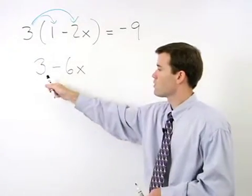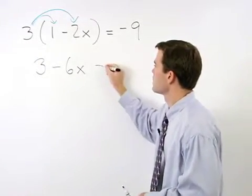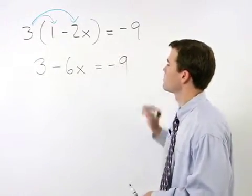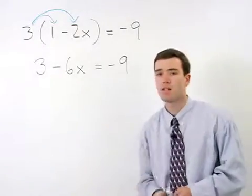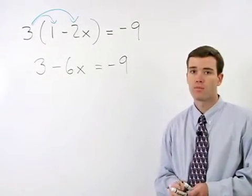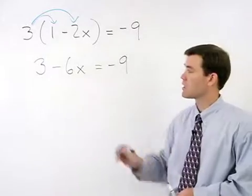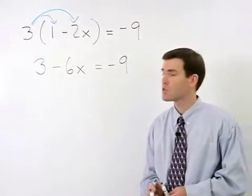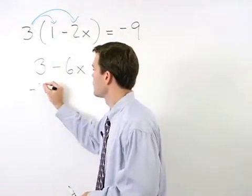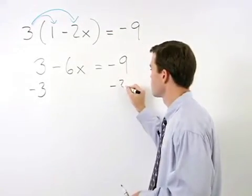So we have 3 minus 6x equals negative 9. And now we have a setup that you should be very familiar with. Our next step is to isolate the x term by subtracting 3 from both sides of the equation.